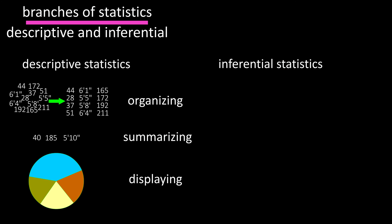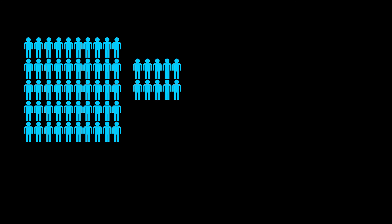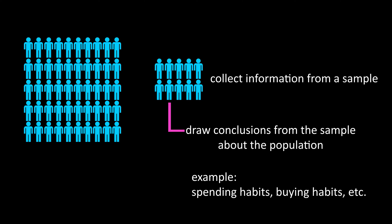Inferential statistics is using a sample to make estimates or draw conclusions about a population. So we would collect information from a sample and then draw conclusions about the population that sample was from.